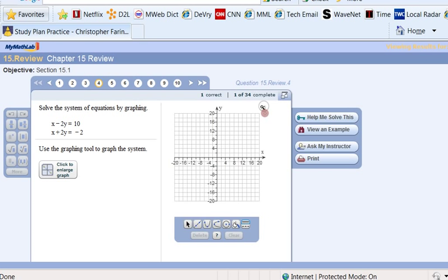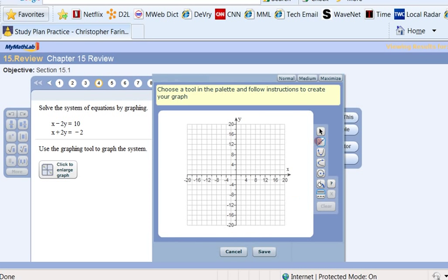March over to MyMathLab and plot those points. For the first one, we're drawing a straight line. Well, the first one, I think we had x was 10. The x-intercept was 10.